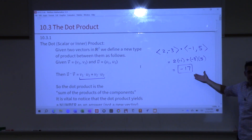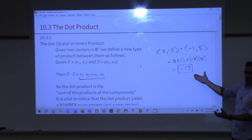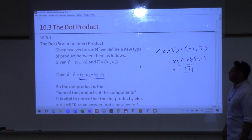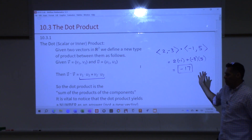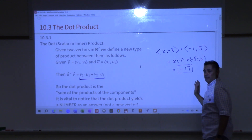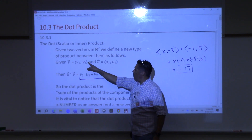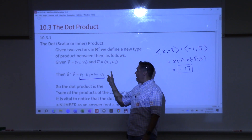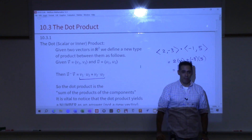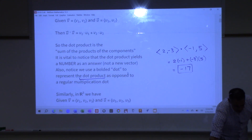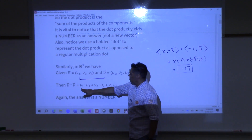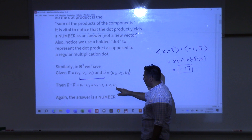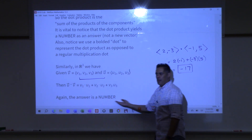Do you all agree that's a pretty simple computation? Nothing challenging — you can do multiplication and addition. How about in R3? If you have a third component, you're just going to add those third components multiplied as well. Do the first components multiply, second components multiply, third components multiply, add all that together — your answer is a number.